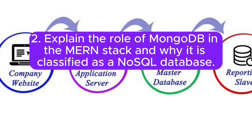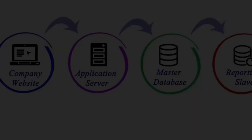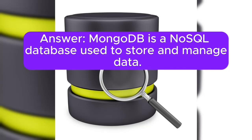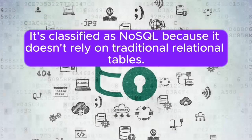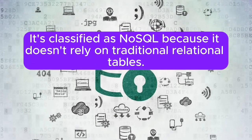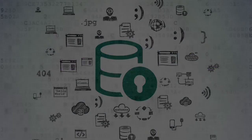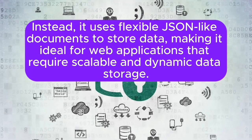2. Explain the role of MongoDB in the MERN stack and why it is classified as a NoSQL database. Answer: MongoDB is a NoSQL database used to store and manage data. It's classified as NoSQL because it doesn't rely on traditional relational tables. Instead, it uses flexible JSON-like documents to store data, making it ideal for web applications that require scalable and dynamic data storage.